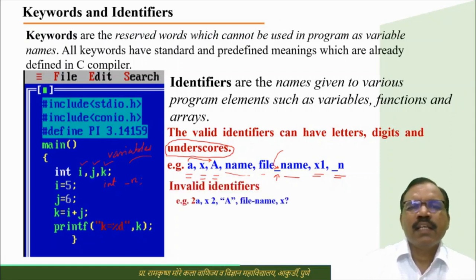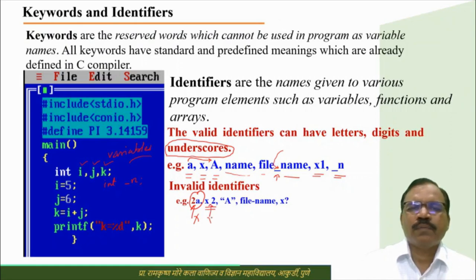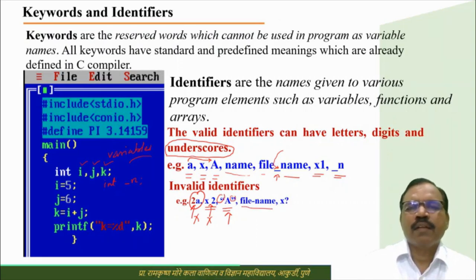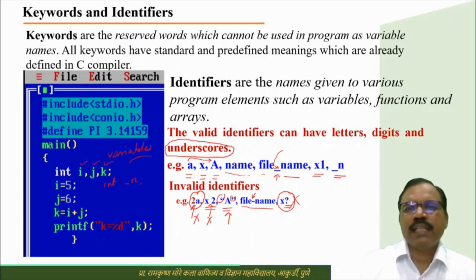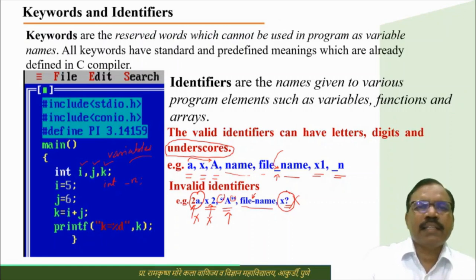Identifiers are names given to various program elements such as variables, functions, and arrays. For example, in our program, i, j, and k are variable names — identifiers to which we assign values. You can write variable names using letters, digits, and underscores. For example: A, x, capital_A, file_name, x1_N. Small a and capital A are two different variables. The only special character allowed in a variable name is the underscore. Invalid identifiers include: 2A (starts with a digit), 'x 2' (space not allowed), "A" (double quotes not allowed), file-name (dash not allowed), and x? (question mark not allowed).